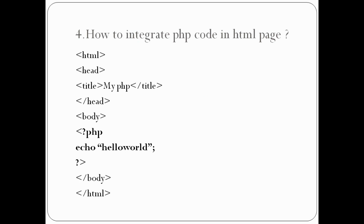To integrate PHP in an HTML page, write HTML code with a head section and body section. The head section contains a title, and in the body section you can use PHP code. Use the syntax: less-than symbol, question mark, PHP, echo 'Hello World', question mark, greater-than symbol. That is how you insert PHP code in an HTML page.